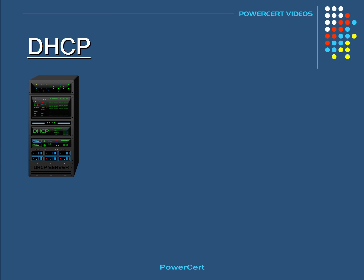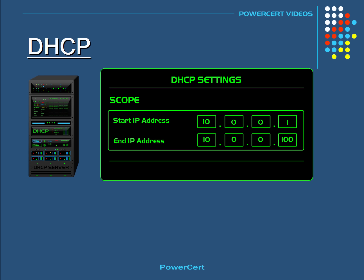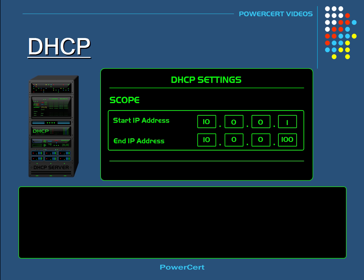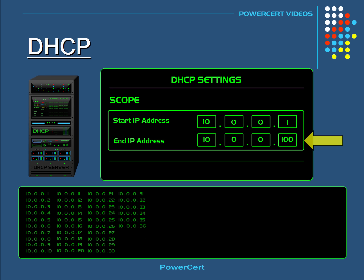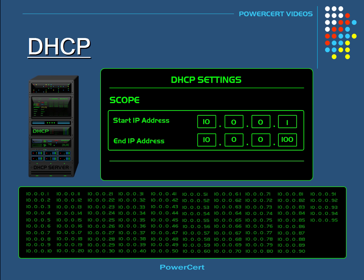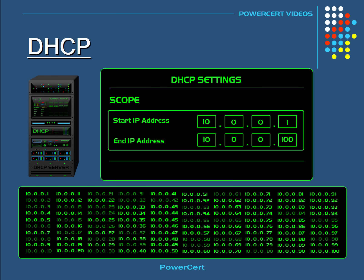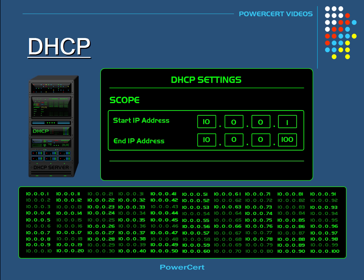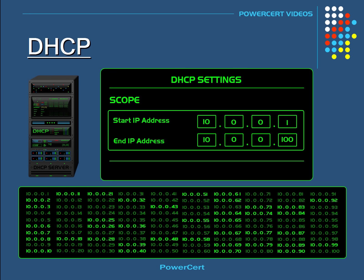A DHCP server assigns IP addresses to computers on a network from its scope. A scope is a range of IP addresses that a DHCP server can hand out. Here we see a scope of IP addresses on this server — the range starts with one IP address and ends with another, so computers on this network will get an IP address from this range. This scope can give out 100 IP addresses. These values can be customized to either increase or decrease the range, depending on what the network administrator wants to do.